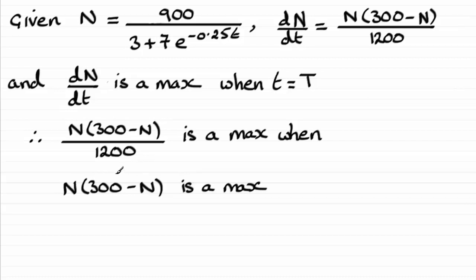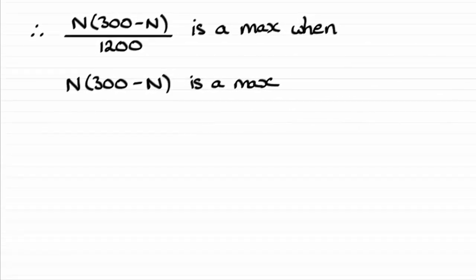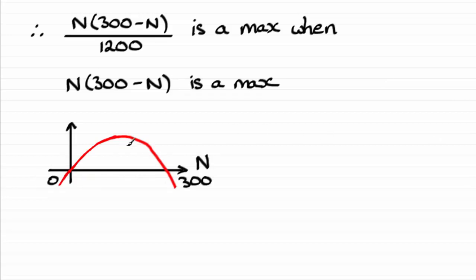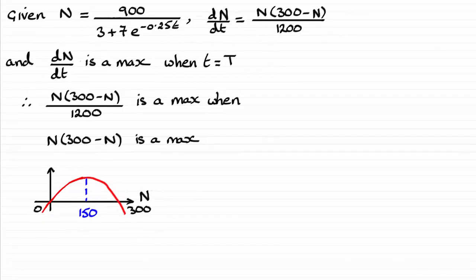We've got a negative quadratic here if you expand this. Looking at the sketch of a negative quadratic, it would cross the n-axis when n is zero or 300. Because it's a symmetrical graph, the maximum point will occur halfway between 0 and 300 — clearly at 150. So when you see this fraction, that maximum is going to occur when n equals 150. You could just state that, saving you from having to differentiate again.